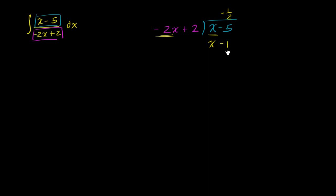Now we want to subtract this yellow expression from this blue expression. Let me just take the negative of this and then add. So we are left with negative 5 plus 1 is negative 4. So negative 2x plus 2 goes into x minus 5 negative one-half times with negative 4 left over.